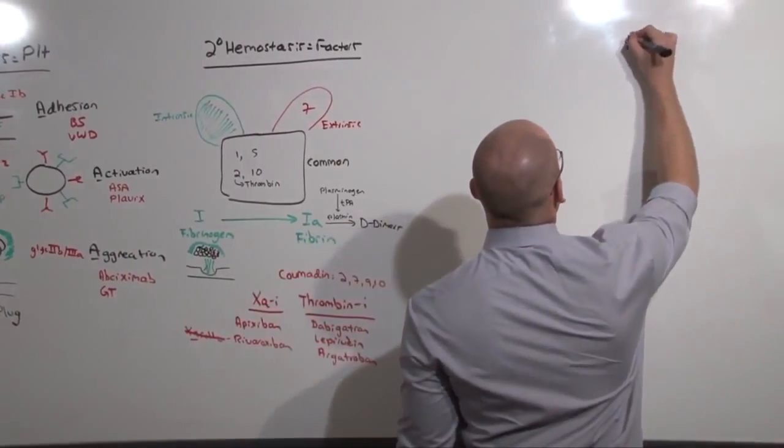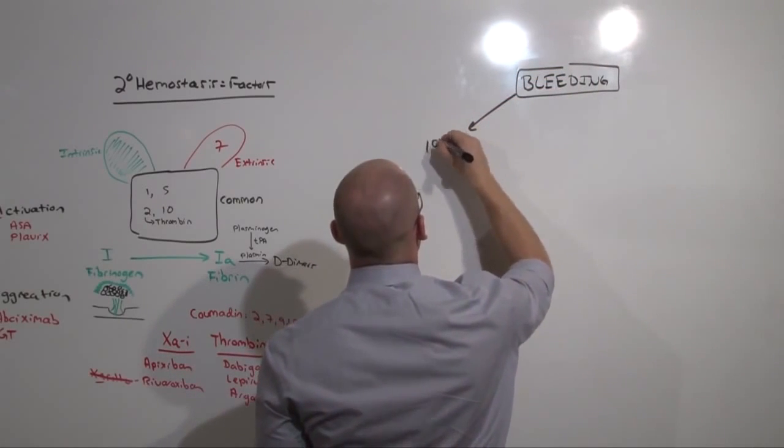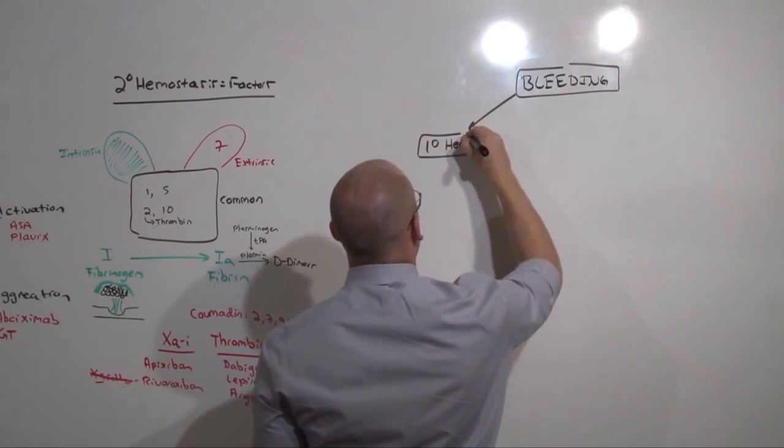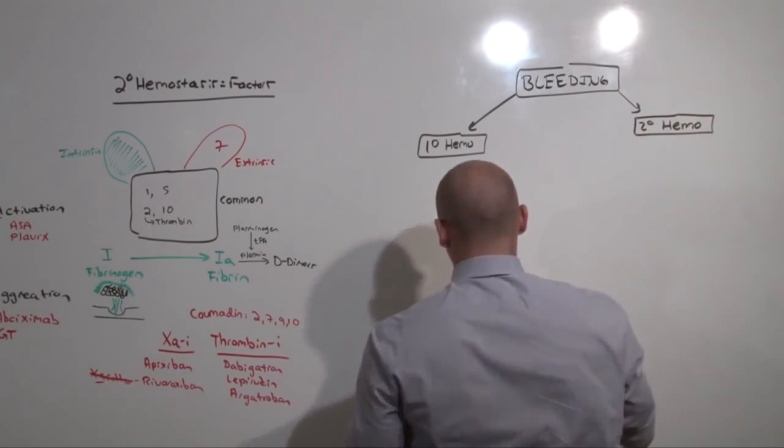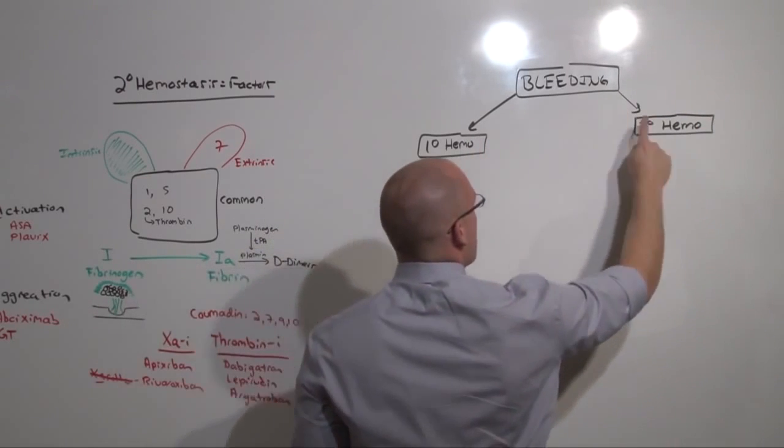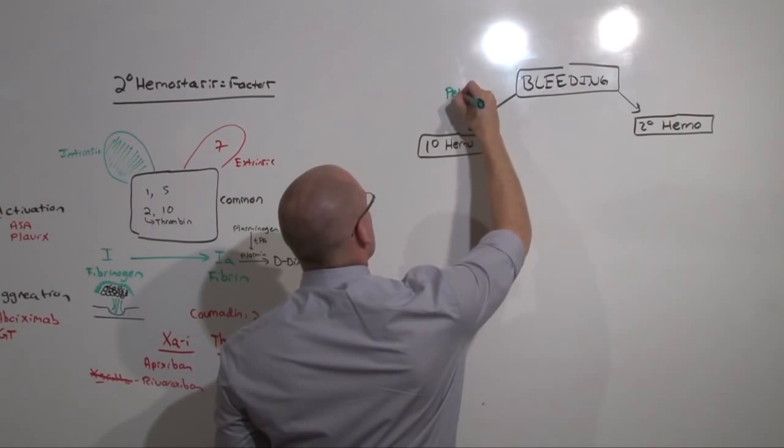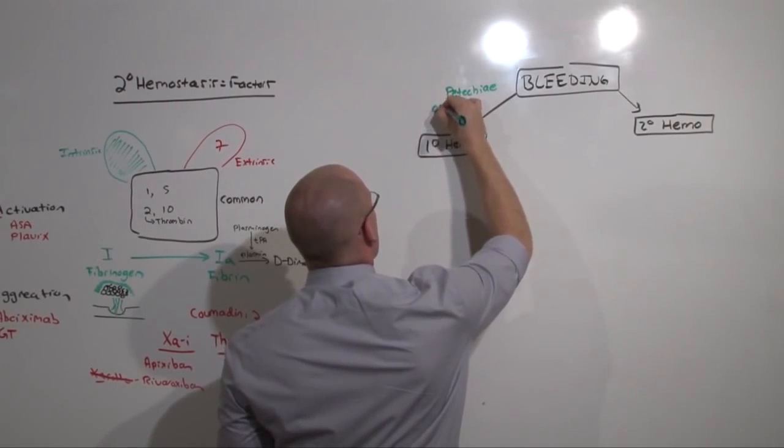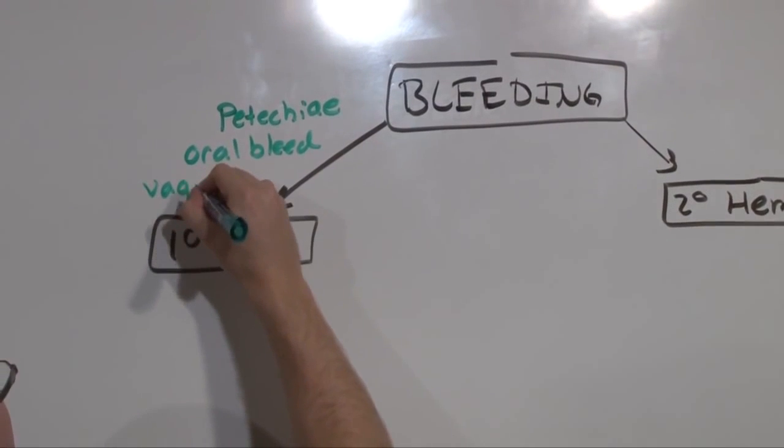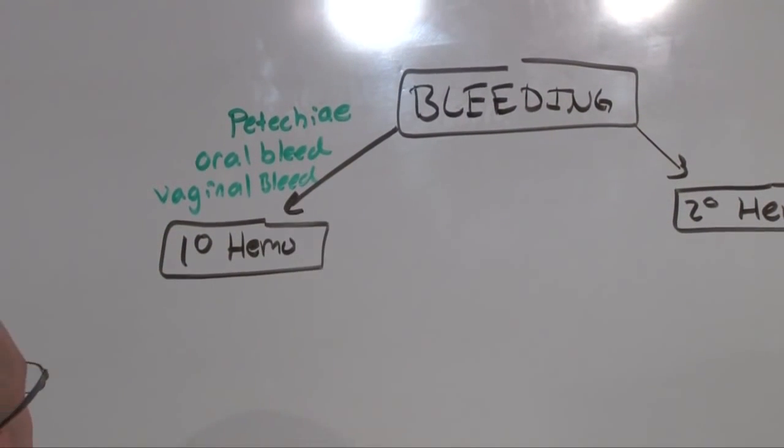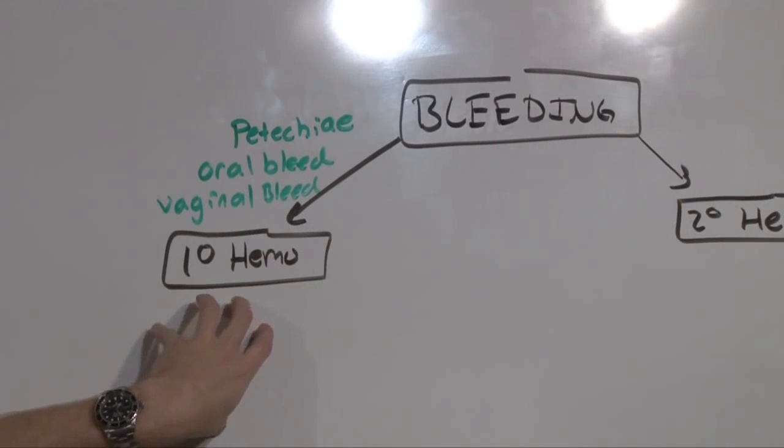When someone comes in with bleeding, you want to be able to separate primary hemostasis from secondary hemostasis. What you're looking for is a superficial bleed on primary hemostasis and a deep bleed on secondary. Primary hemostasis is superficial and is going to present with petechiae, oral or gingival bleeding, and the same tissue as in the oral pharynx, the vagina. So the patient who has menometrorrhagia or bleeding gums whenever they brush their teeth or simply have the rash of petechiae on their skin is indicative of primary hemostasis.